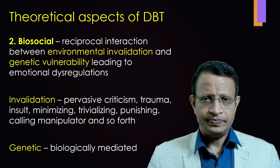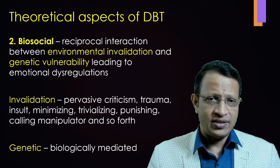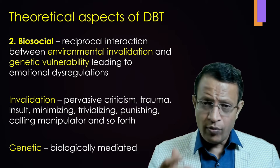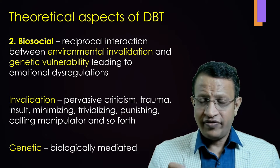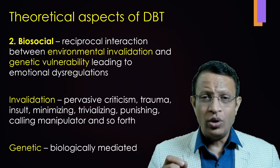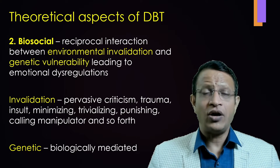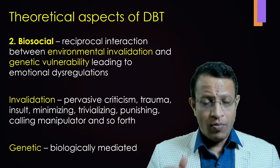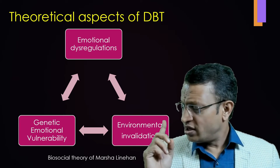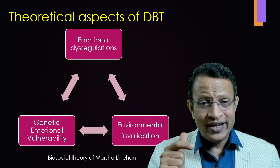Moving to the second important theory: biosocial theory. This is the reciprocal interaction between environmental invalidation and genetic vulnerability, leading to emotional dysregulation. Invalidation means that when a child is growing, it has its own experience, thoughts, emotions, and behavior. If parents, family members, friends, and school teachers constantly criticize, minimize, insult, bully, trivialize, or punish the child, and call the child a manipulator, this leads to invalidation. Over time, because the genetic vulnerability is already there, the child will develop various psychiatric disorders — borderline personality disorder, eating disorder, and other psychopathology. This is biosocial theory.